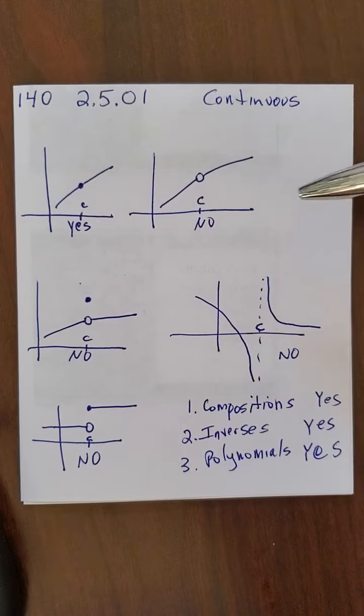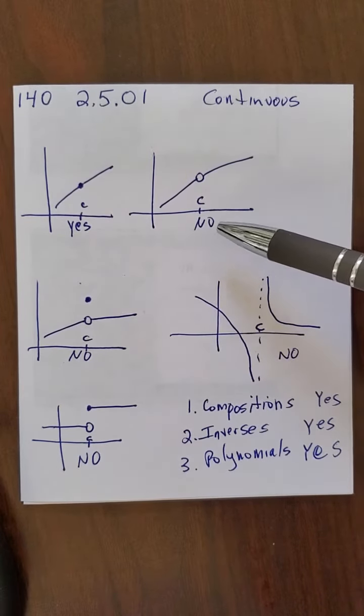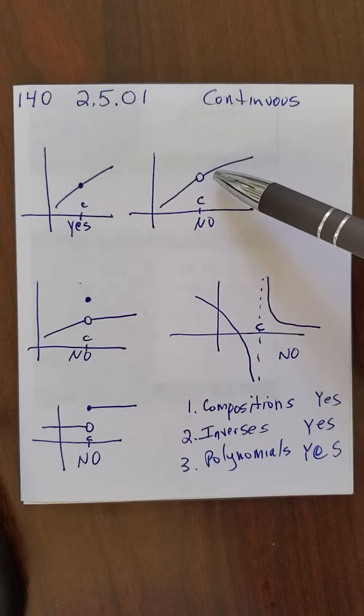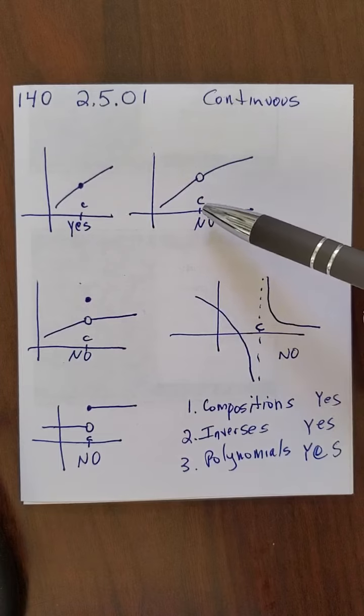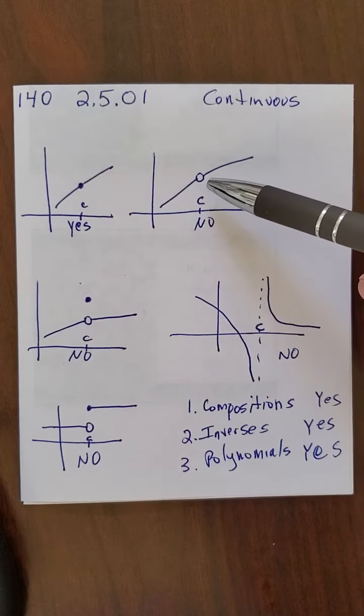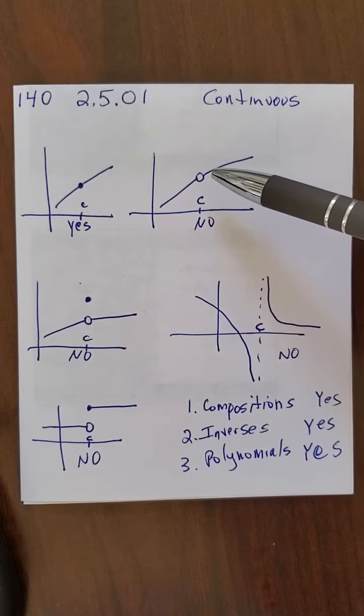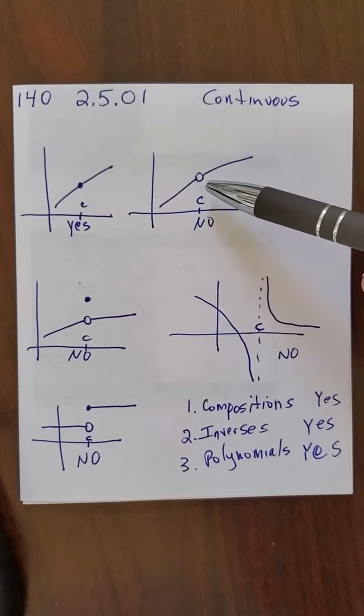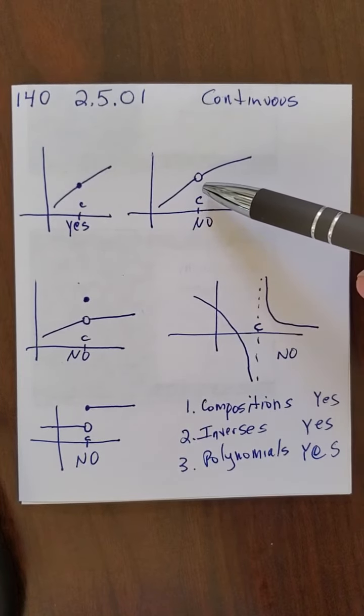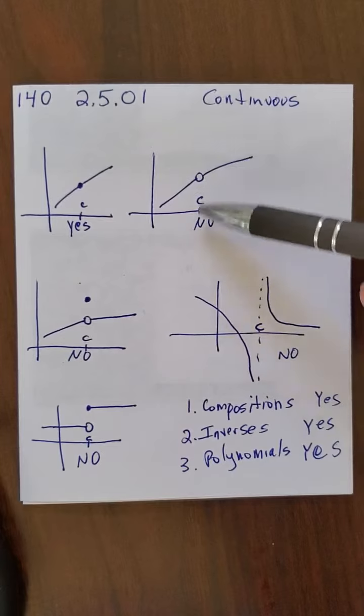So let me give you some examples of all these other functions that are not continuous. This is not continuous. The limit exists. As the function approaches C, the limit is that whatever that y value is right there. The limit exists. That's cool. The problem is that the function value doesn't exist at that point. The function is not defined when x equals C. That's why there's a hole here, and there's nothing else.